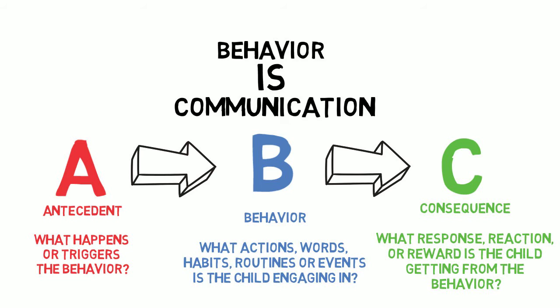With your own child, I want you to create an A, B, C chart where you're first observing your child and writing down and documenting what was the antecedent of the behavior, what was the behavior, and what is the consequence — what's happening afterwards. Even if it changes each time, write it down. It's really important information that will help you over the day, the week, the month to find the pattern. Why is the child engaging in this? What is the function of that behavior? What reward or reaction are they getting?